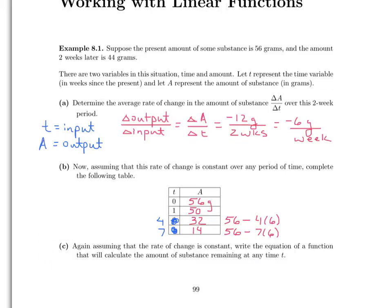Okay, let's look at Part C. Again, assuming that the rate of change is constant, write the equation of a function that will calculate the amount of substance remaining at any time. Well, we can go back to our table for assistance here. We calculated the amount remaining at some very particular times, but what if my time was t instead? How would I calculate the amount remaining? Well, we can do it the very same way. I started off with 56 grams, and then we need to subtract off how much was lost. In this case, we're losing 6 grams a week, and if we're going out to t weeks, then we will have lost 6t grams. So 56 minus 6t should give us the amount remaining, which is A.